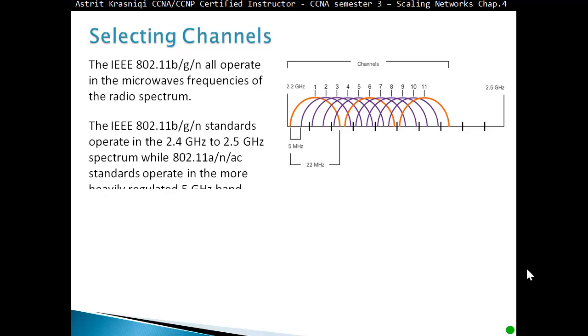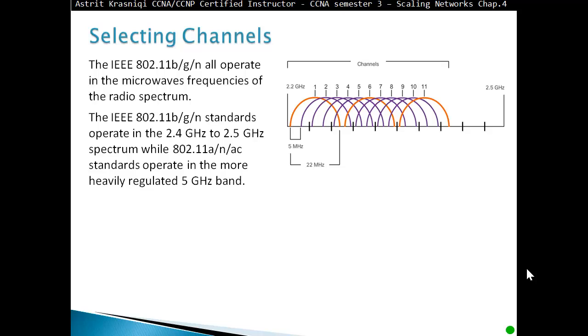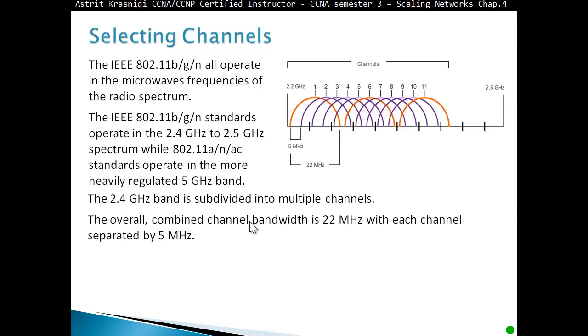IEEE 802.11b/g/n standards operate in the 2.4 GHz to 2.5 GHz spectrum, while 802.11a and ac standards operate in the more heavily regulated 5 GHz band. The 2.4 GHz band is subdivided into multiple channels. The overall combined channel bandwidth is 22 MHz with each channel separated by 5 MHz.